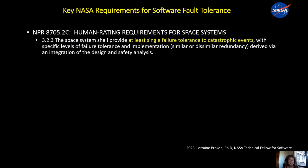Before we get into the statistics, let's quickly go through, as a reminder, the existing NASA requirements for software fault tolerance. These are from the human rating requirements for space systems. There's the requirement that systems have to have single failure tolerance to catastrophic events, which implies more than one copy of software most of the time.